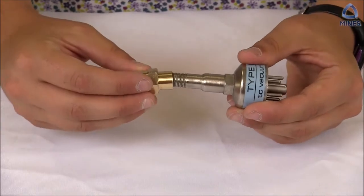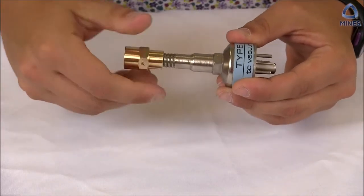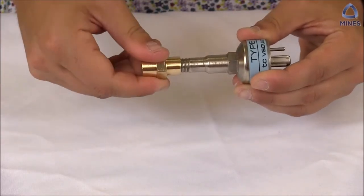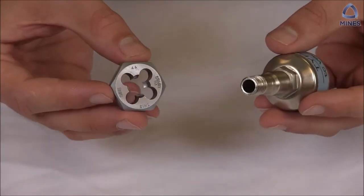Before applying tape to your fitting, you may want to test thread the male into the female fitting to check to see if there is any significant interference. If there appears to be some thread damage, you can redress male fittings with a die and female fittings with a tap.